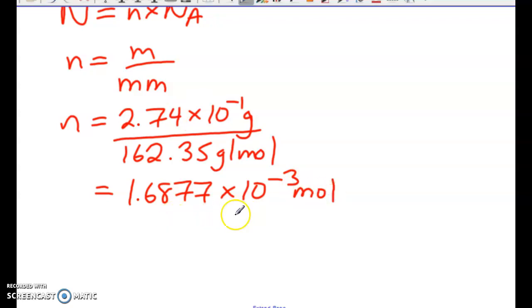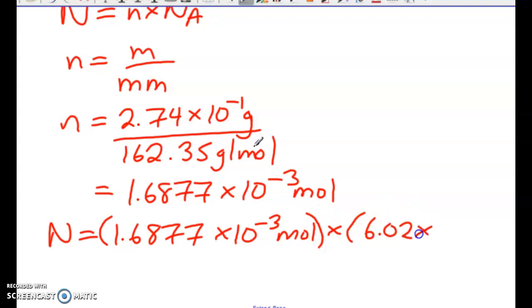And remember, we're not done yet, so we're not going to round this. But we can now solve for the number of molecules, because we have our mole value. So remember, it's going to be moles times Avogadro's number. And this, when you're doing the calculations, right, we know that this goes into brackets. So we're going to take that and we'll multiply by, so we have 1.6877 times 10 to the negative 3 times 6.02 times 10 to the exponent 23.